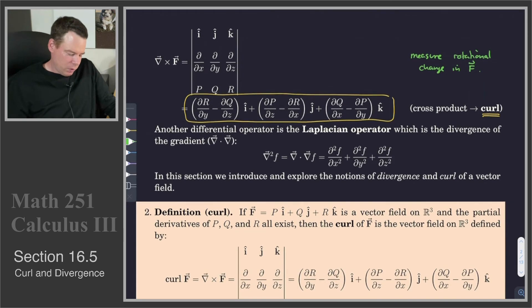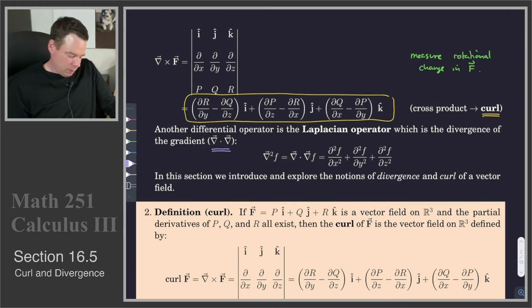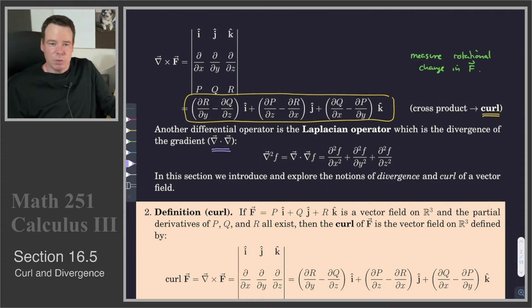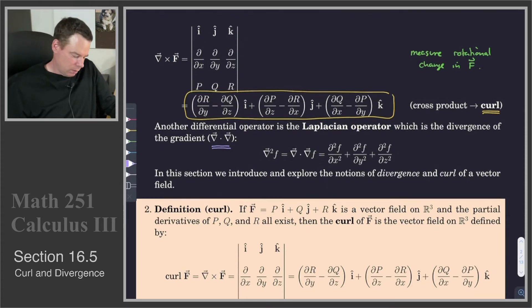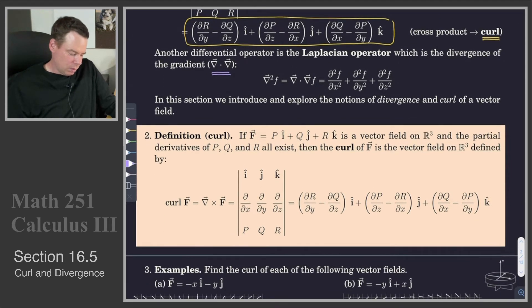There's one last differential operator: the Laplacian operator. It is the dot product of del with itself, so we typically refer to it as del squared (∇²). Del squared f equals ∇·∇f, which is just the sum of the second partial derivatives of f. That's another measure of the change of a scalar function. We're going to be focused on the first three: gradient, divergence, and curl.